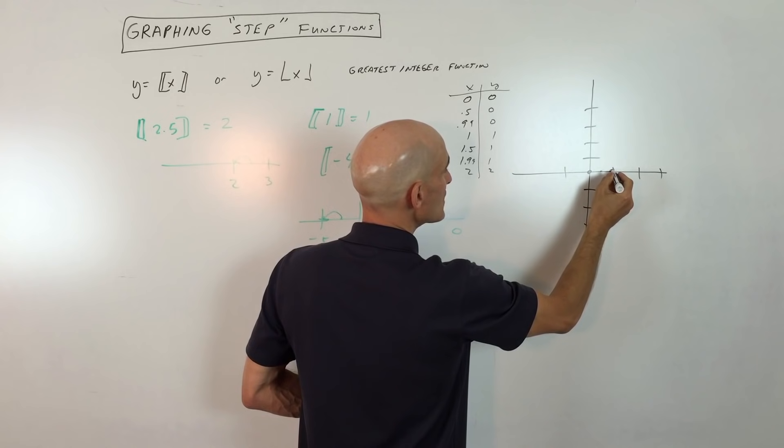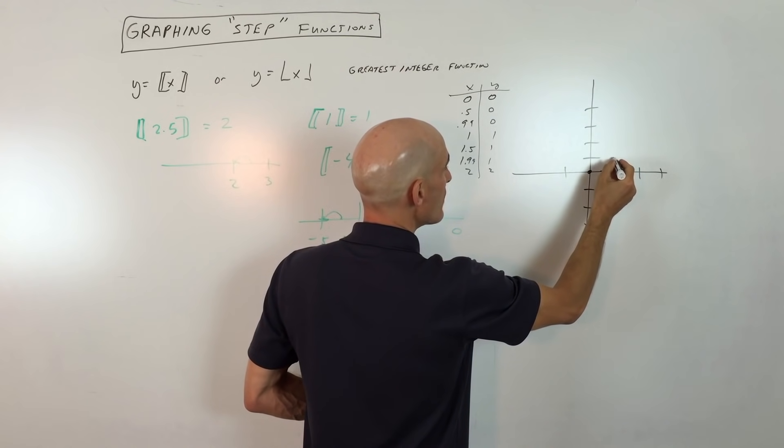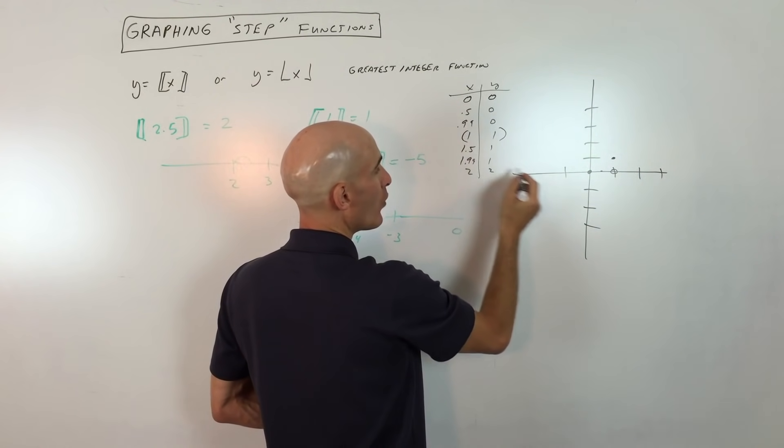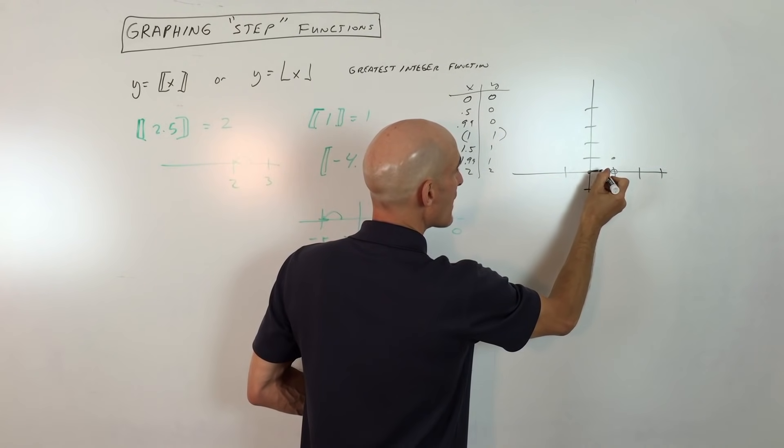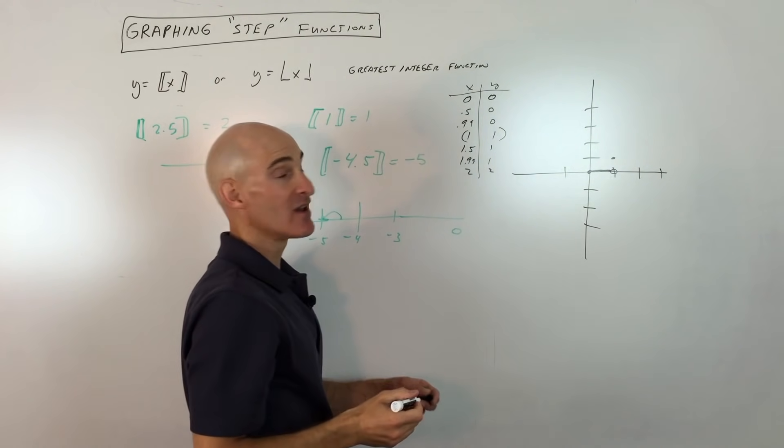But as soon as we get to 1, we jump up to 1. See, this is the (1, 1). So what we have here is we have a step, so you can see where the step function name comes from.